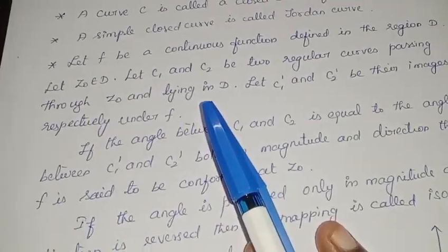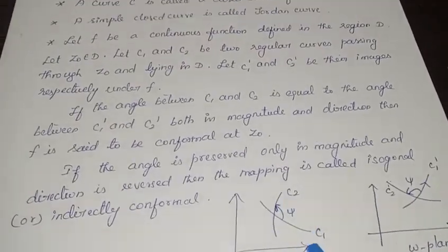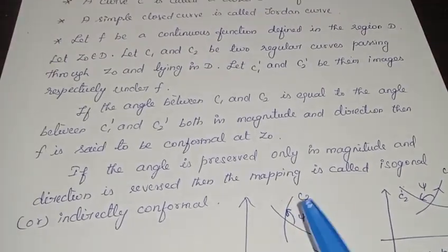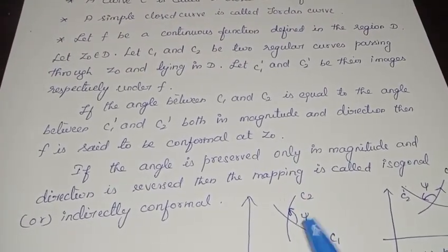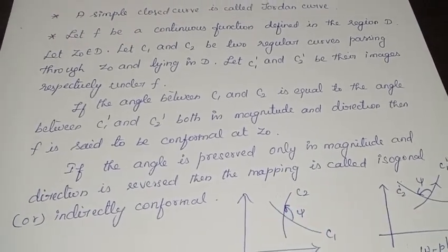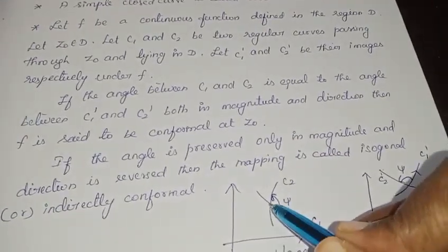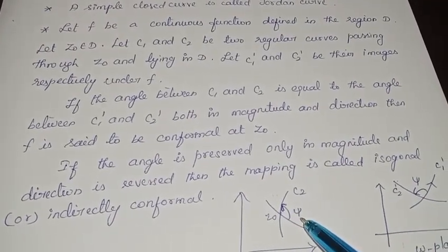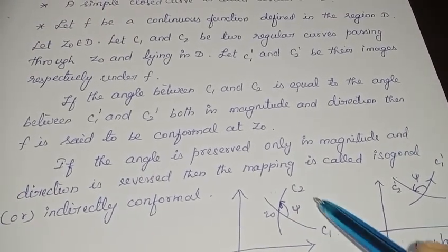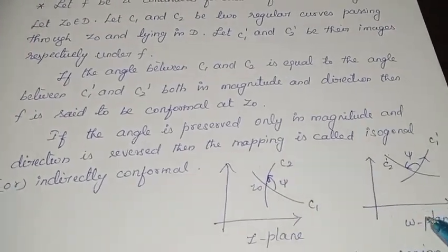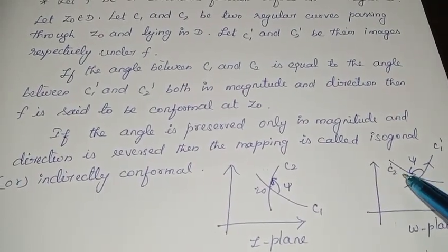Now let us come to the definition of a conformal mapping. In the z-plane, I am taking two curves c1 and c2. c1 and c2 are two regular curves — regular curves means the tangent exists at each and every point of the curve. This curve is passing through the point z₀, the point where they are intersecting, which is called z₀. These two curves are intersecting at z₀. The angle between these two curves, let us take it as ψ.